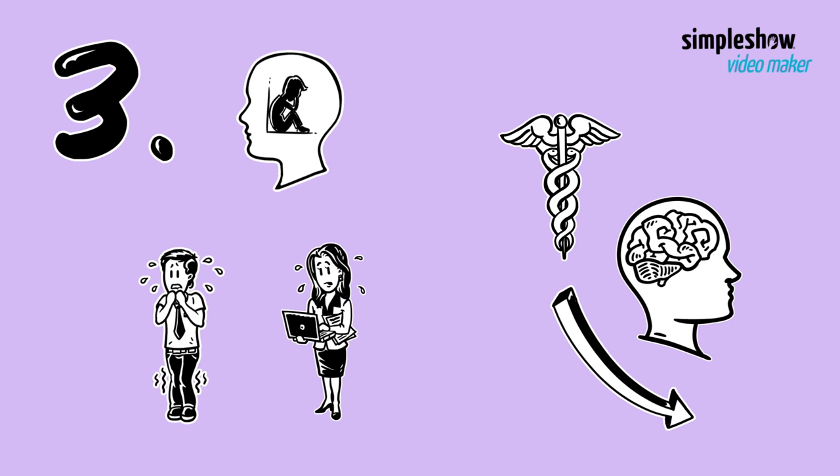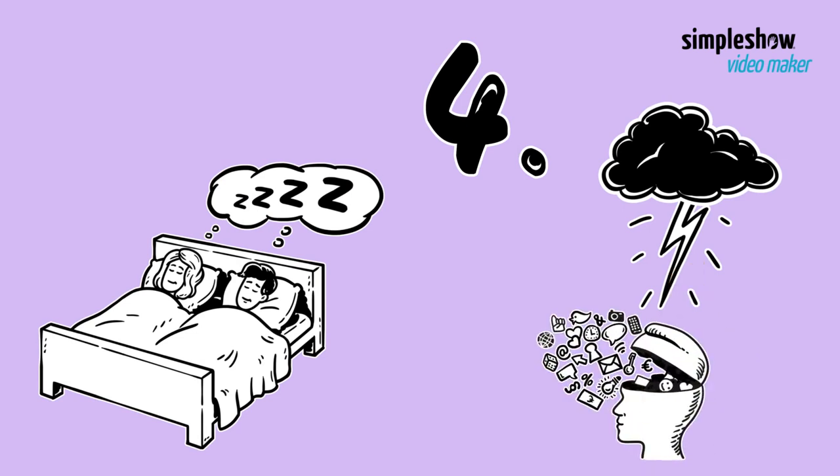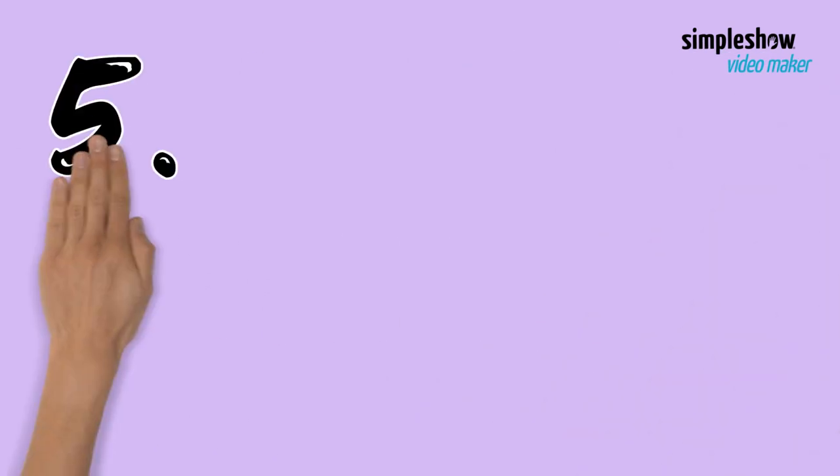Four: get enough sleep to reduce problems with memory and thinking. Five: eat a balanced diet that is higher in vegetables and fruit to help reduce the risk of cognitive decline.